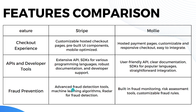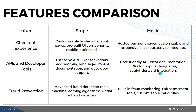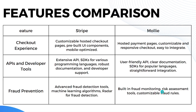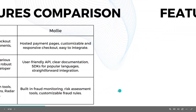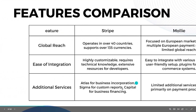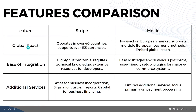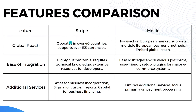When it comes to fraud prevention, Stripe has advanced fraud detection tools, machine learning algorithms, and Radar for fraud detection. Mollie has built-in fraud monitoring, risk assessment tools, and customizable fraud rules.